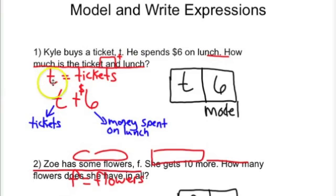We told what our variable was, which is T. And we also included what that variable represented, which would be the tickets.